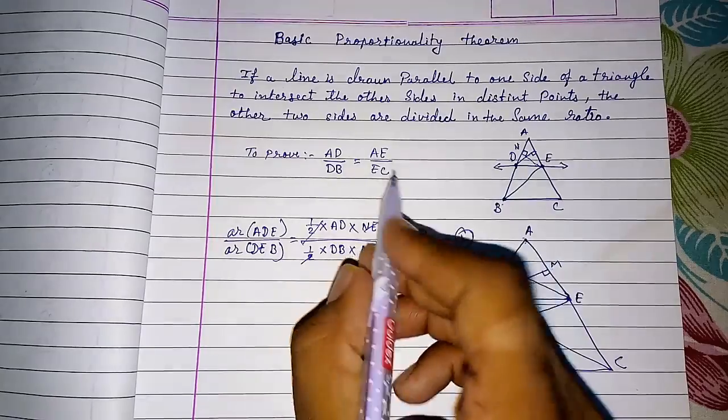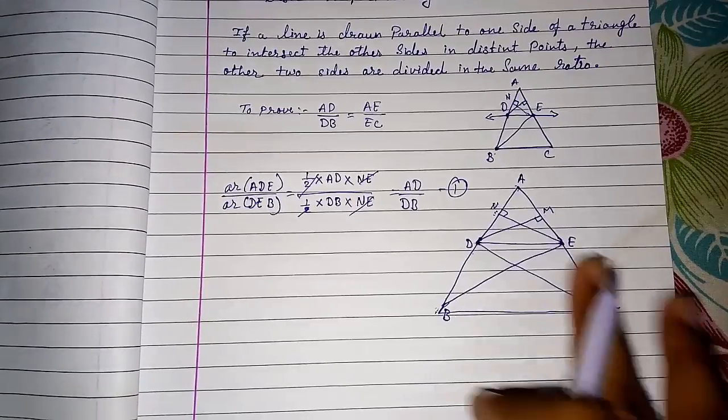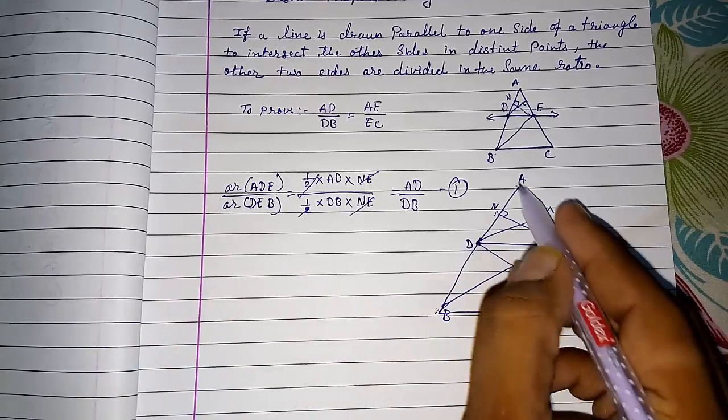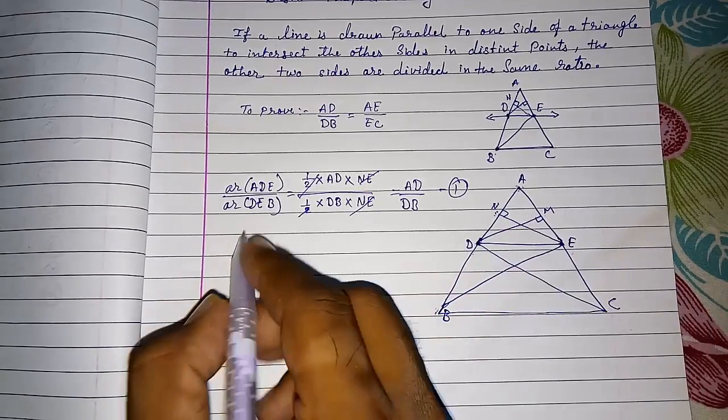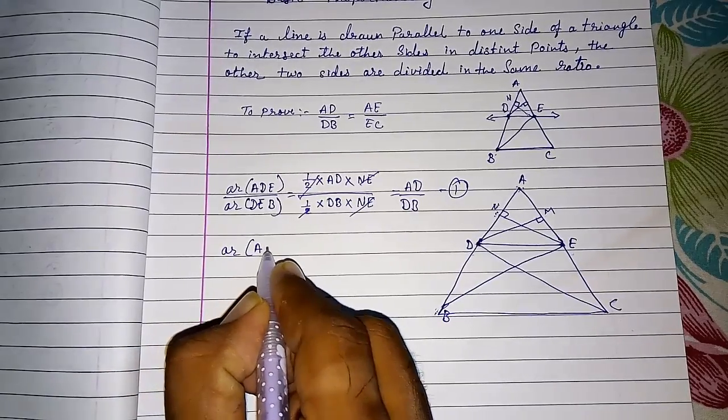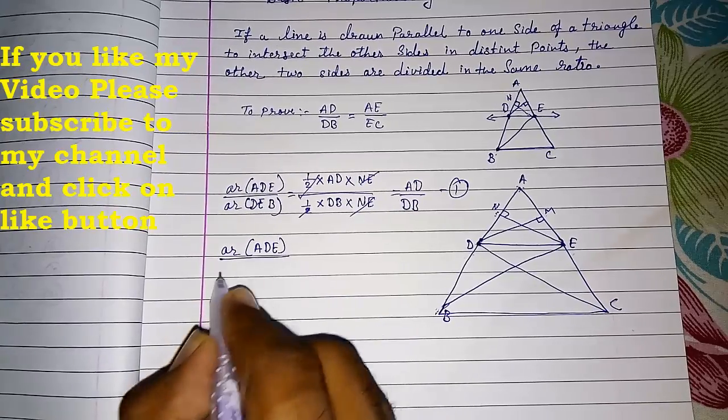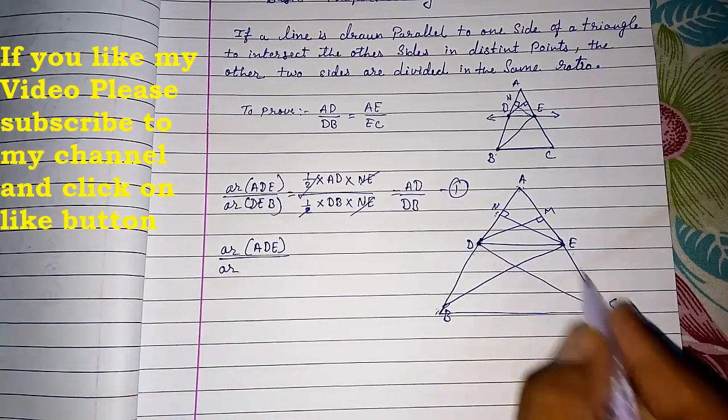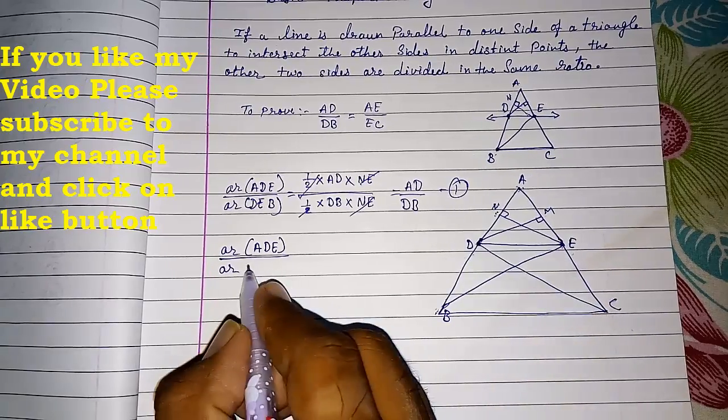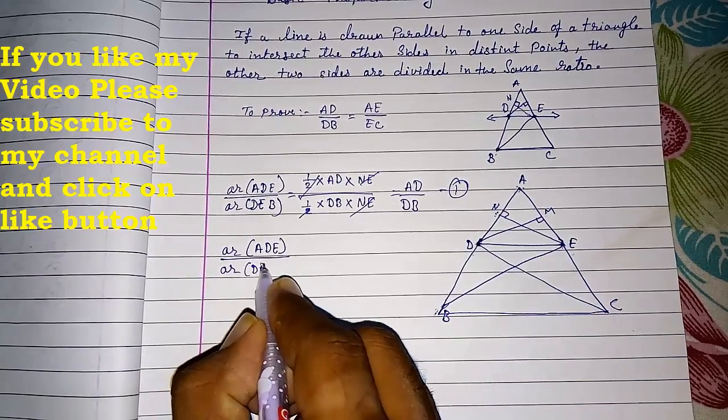Now we want AE upon EC. So we will move on the other side. Now again the same triangle. This AE is base of that same triangle. So area of ADE upon area of now this side, so triangle DEC.